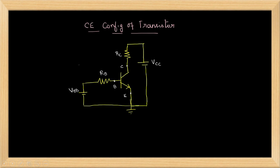This is the CE configuration of the transistor. When the transistor is used as amplifier, the EB junction is forward biased and the collector base junction is reverse biased. When we apply DC voltage to the circuit, the current and voltages will establish in the circuit.